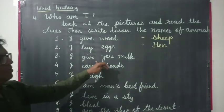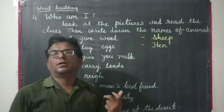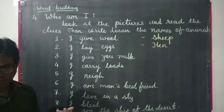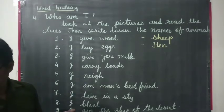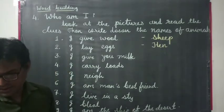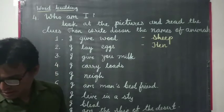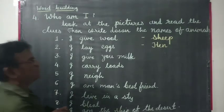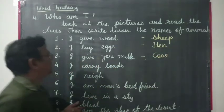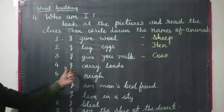Now, I give you milk. Like cow, sheep, goat — buffaloes give us milk. But here we find out the name from the crossword. Which animal gives us milk? Yes, cow — C-O-W. Cow gives us milk.